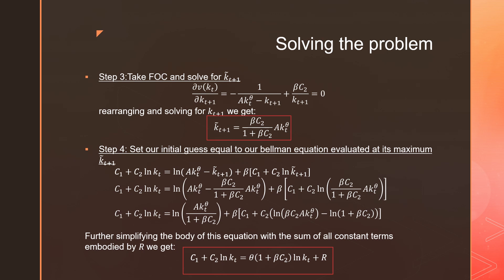If we simplify this body of equations with the sum of all the constant terms embodied in R, we get the following: C_1 plus C_2 log k_t is going to be equal to theta times (1 plus beta C_2) times log k_t plus R, which is all of our constant terms.